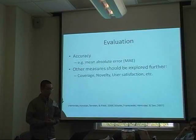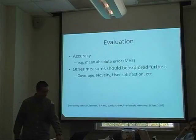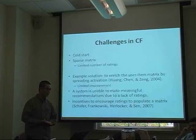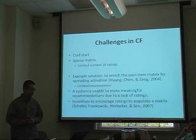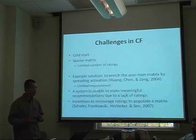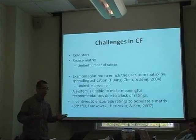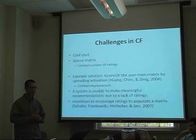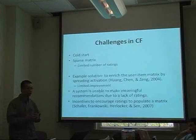Other measures such as coverage, novelty, and user satisfaction should be explored further. Collaborative filtering has made some progress in recent years, but there have also been big challenges. One primary issue is cold start, which is related to the sparse matrix problem. Given a very large number of users and items, the number of ratings is relatively small, and with that small number of ratings it is very difficult to make predictions.